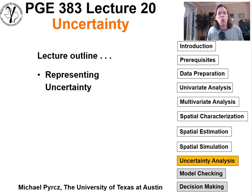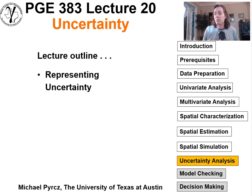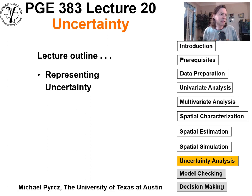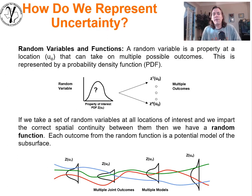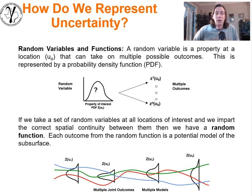Howdy everyone! We'll carry on our discussion about uncertainty for subsurface modeling and talk about how we represent uncertainty. The most correct answer for subsurface modeling and geostatistics is that we make use of what's known as random variables and random functions.